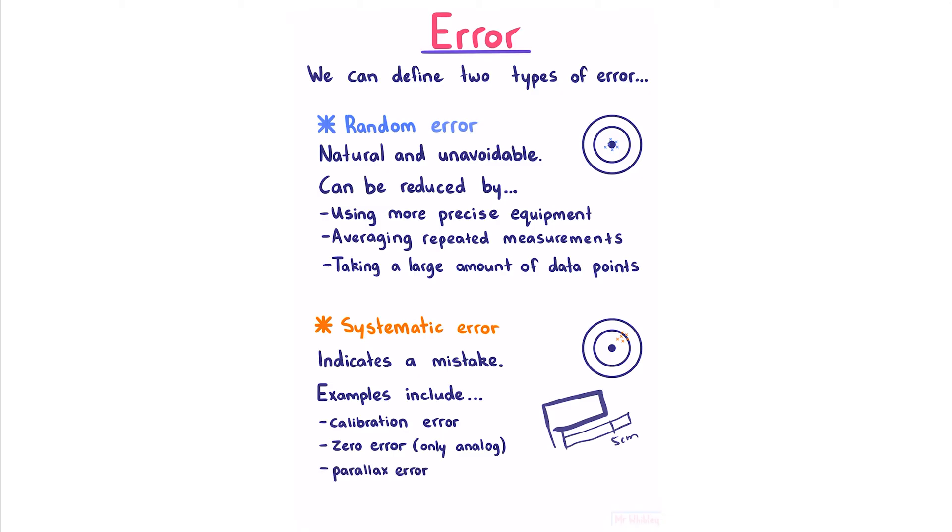And finally parallax error, which is the error from perspective. So if you had your eye here, and you were viewing the time for some object to fall to a specific height, the location of your eye is going to affect the perceived height. To account for this, you would make sure that your eye is level with the measurement.